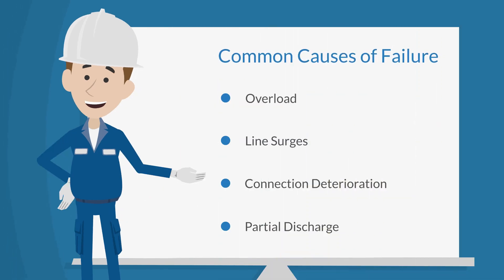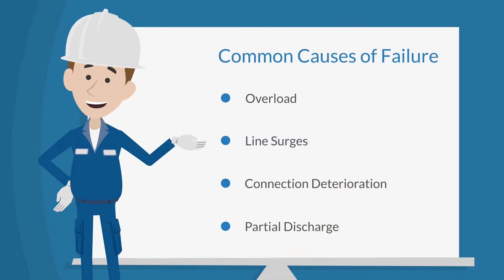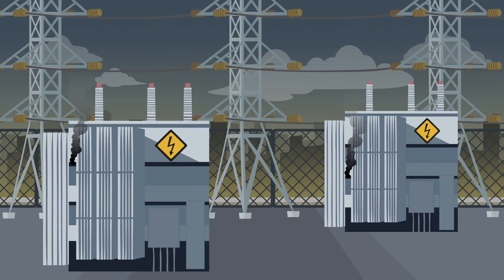Electrical transformer failures are either mechanical or electrical in nature. The common causes of transformer failures include overload, line surges, connection deterioration, and partial discharge, among others. Anything that causes the transformer to become hot will result in breakdown of the insulation, causing it to become brittle over time, eventually leading to a failure.